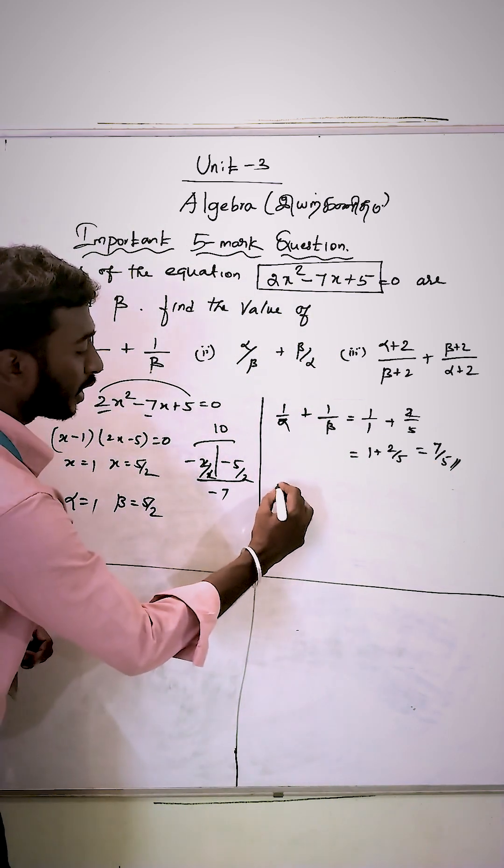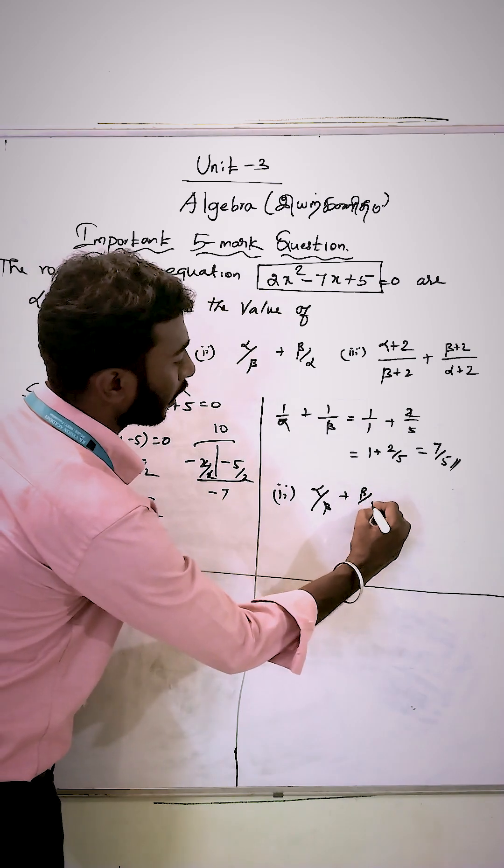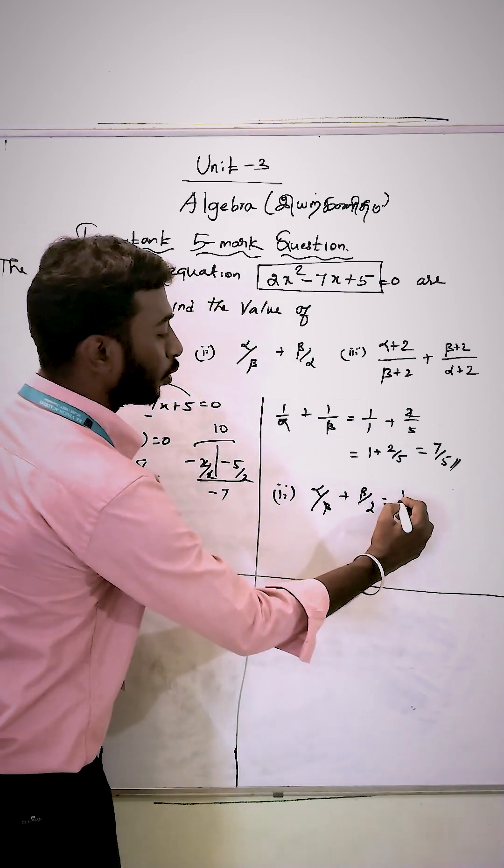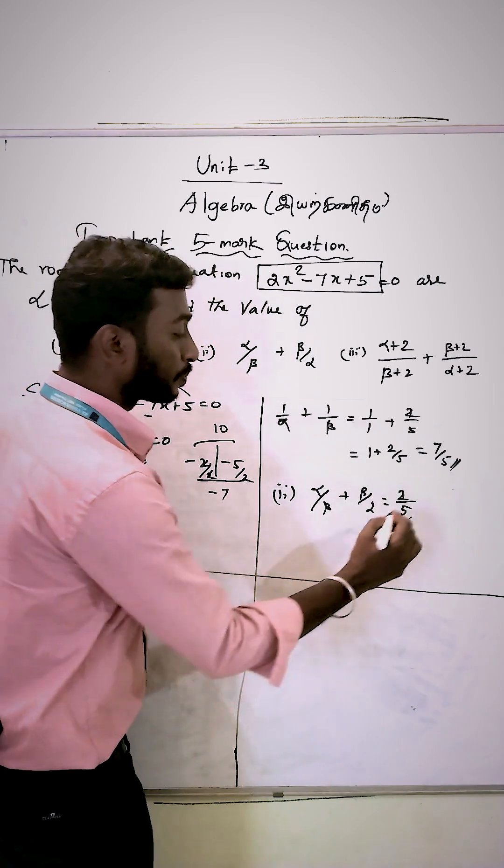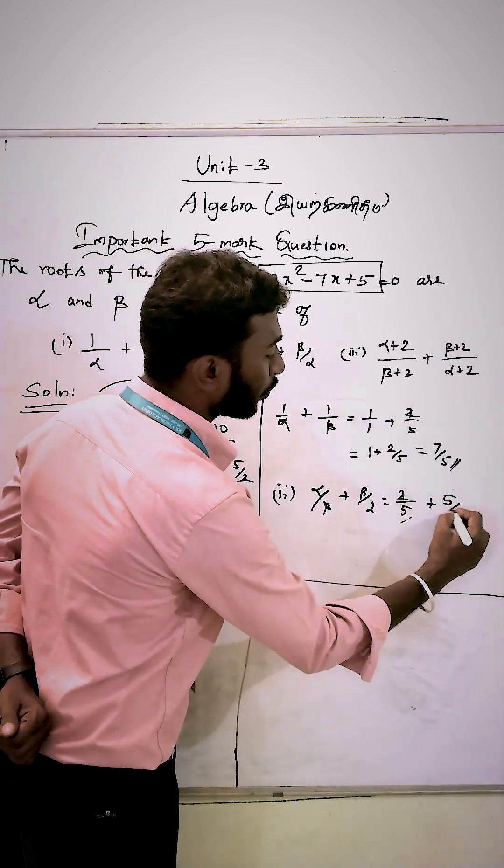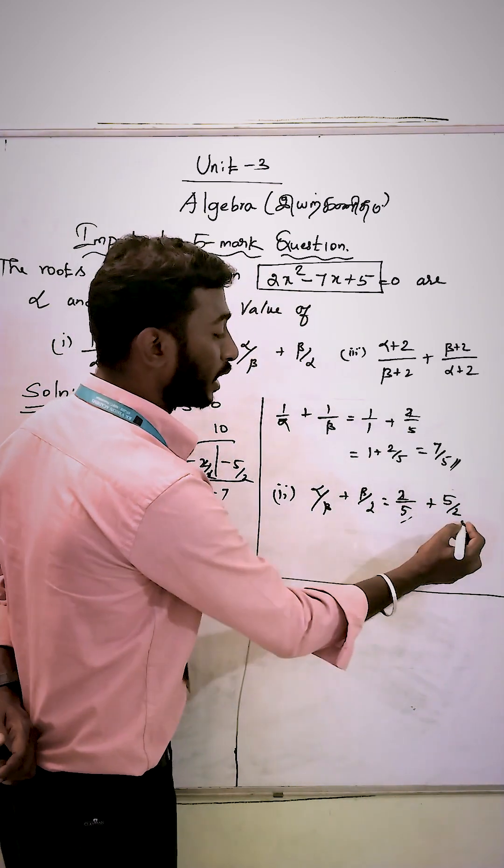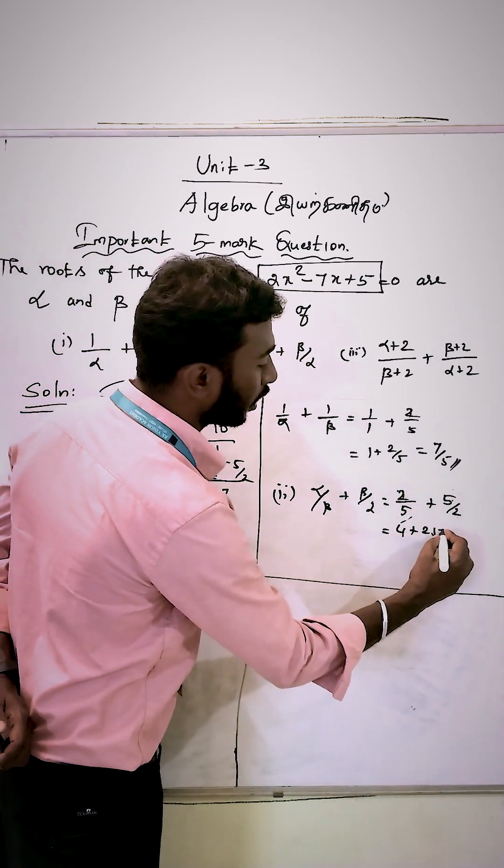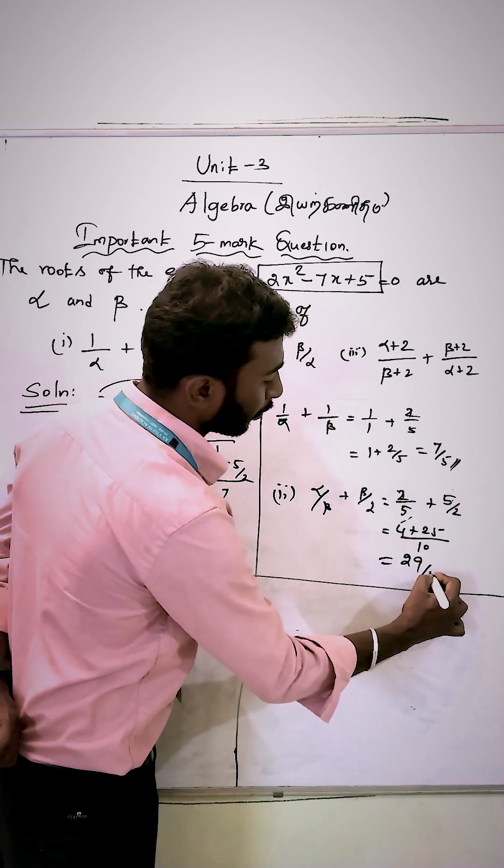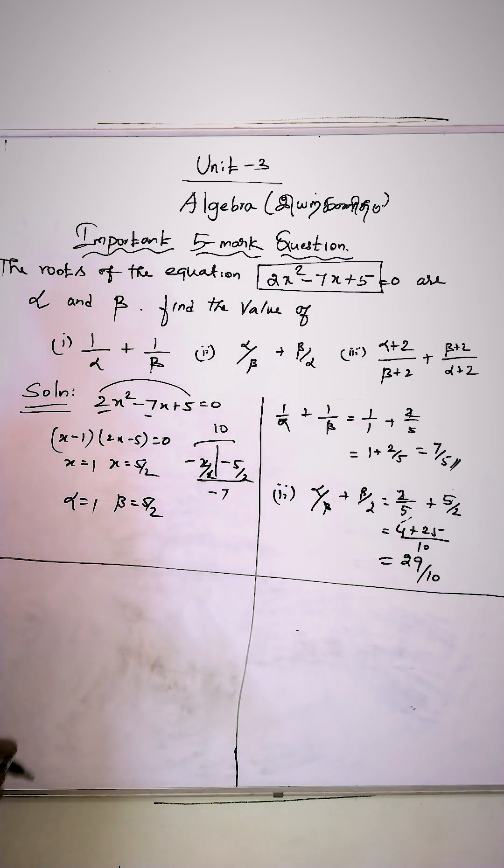Question 2: alpha by beta plus beta by alpha. Alpha value 1 divided by 5 by 2 is 2 by 5, plus beta value 5 by 2 divided by 1. So 2 times 2 is 4, 5 times 5 is 25, giving us 4 by 25 plus 25 by 4, which equals 29 by 10.